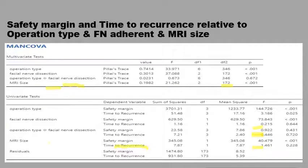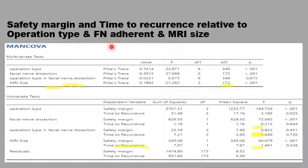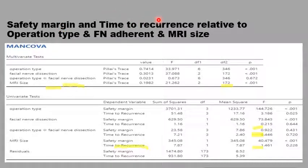Here is an example of such a situation when we're trying to analyze the effect of several different factors on a certain outcome. We are trying to see the effect of different types of parotid surgery — like partial parotidectomy, hemiparotidectomy, total parotidectomy, radical parotidectomy, and radical parotidectomy with neck dissection — and other factors like whether the tumor was adherent to the facial nerve or not, and the size of the tumor as measured by the MRI scan.